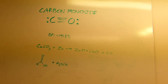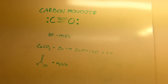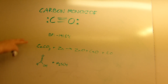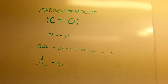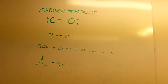Hi everyone, welcome to another Doug's Lab video. In this video, we'll be discussing the use and synthesis of carbon monoxide in the laboratory. Carbon monoxide has a formula of CO — it's a carbon triple bonded to an oxygen. It has a very low boiling point of minus 191.5 degrees Celsius, so it is a gas at room temperature and not easily liquefiable.